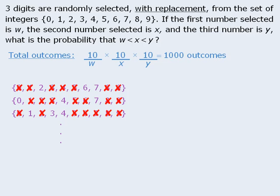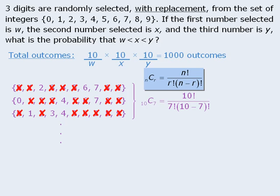There are ten numbers, and we must choose seven of them to cross out. This can be accomplished in ten choose seven ways. When we apply the combination formula, we see that ten choose seven evaluates to be 120. So there are 120 outcomes where the three numbers are selected in ascending order, meaning our probability is 120 over 1000, which equals 0.12.